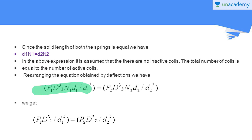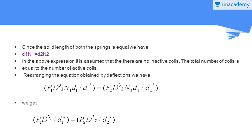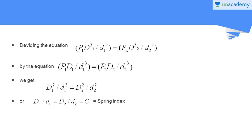After canceling n₁d₁ and n₂d₂, we get P₁D₁³ / d₁⁵ equals P₂D₂³ / d₂⁵. This relation is obtained from the deflection equation combined with the condition that the solid lengths of the two springs are equal.